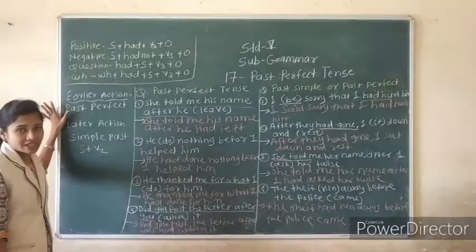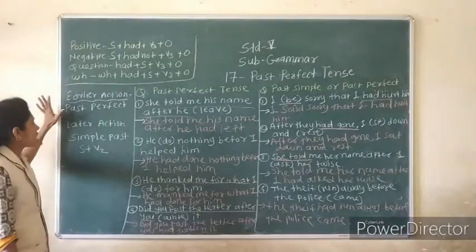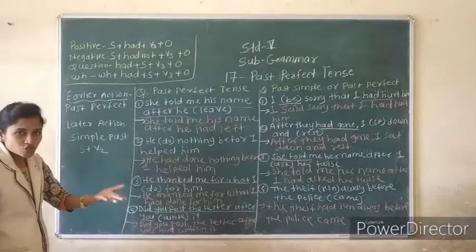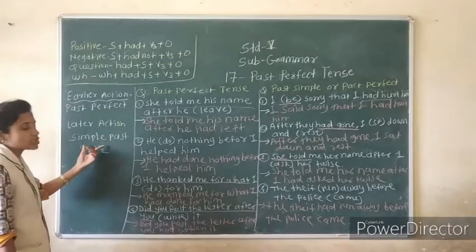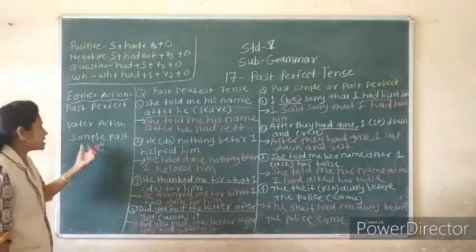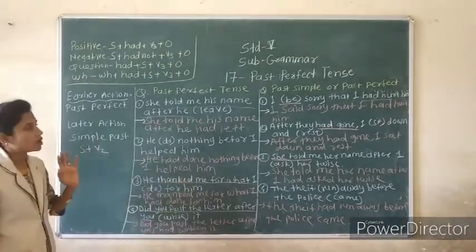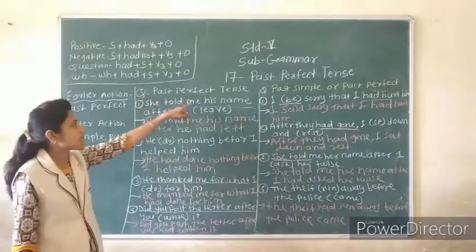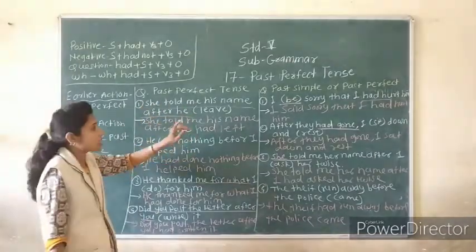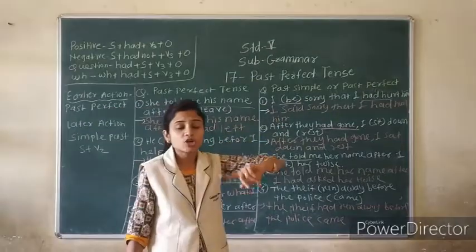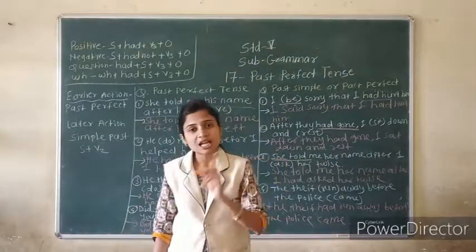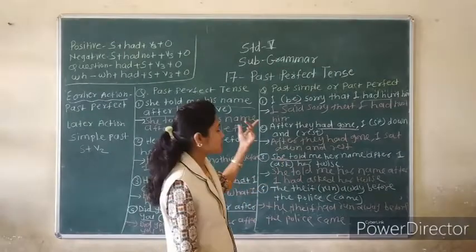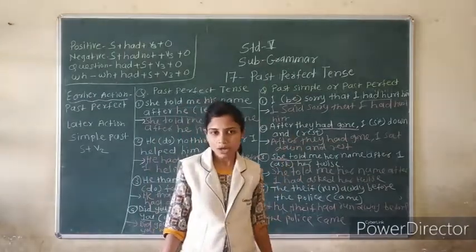Earlier action (pehle): use Past Perfect. Later action (baad mein): use Simple Past — Subject plus verb 2. First question is simple — only Past Perfect. For the second question, first find out which is the earlier and which is the latter, then use Past Perfect or Simple Past accordingly.